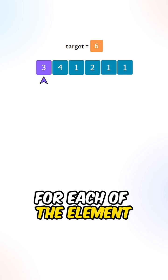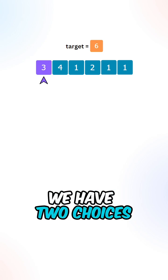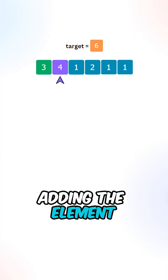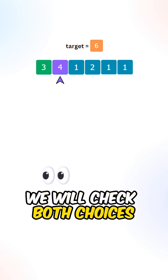For each of the elements inside the array, we have two choices. The first choice is not adding the element to our subset and skipping it. The second choice is adding the element to our subset. We will check both choices.